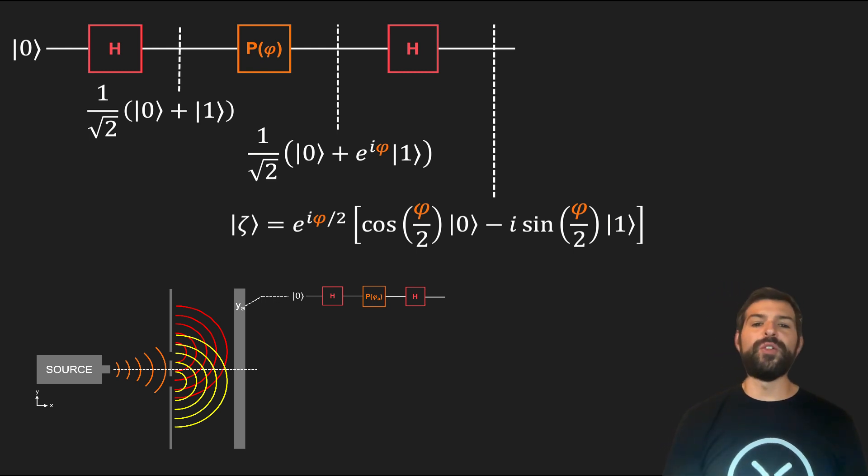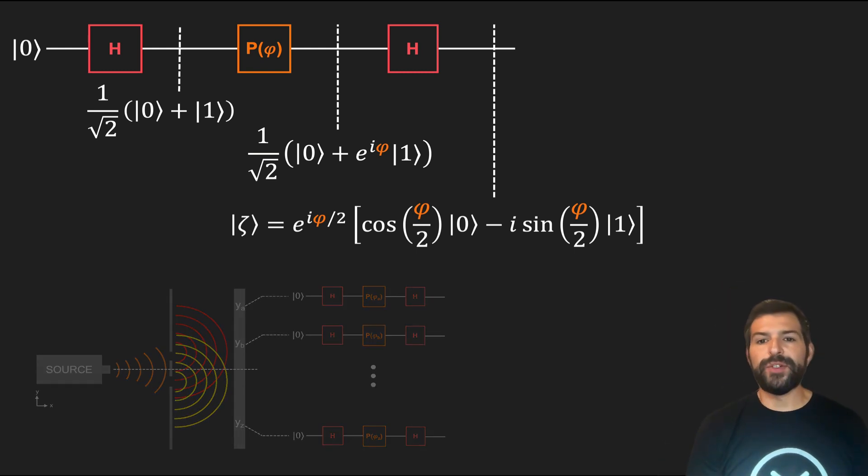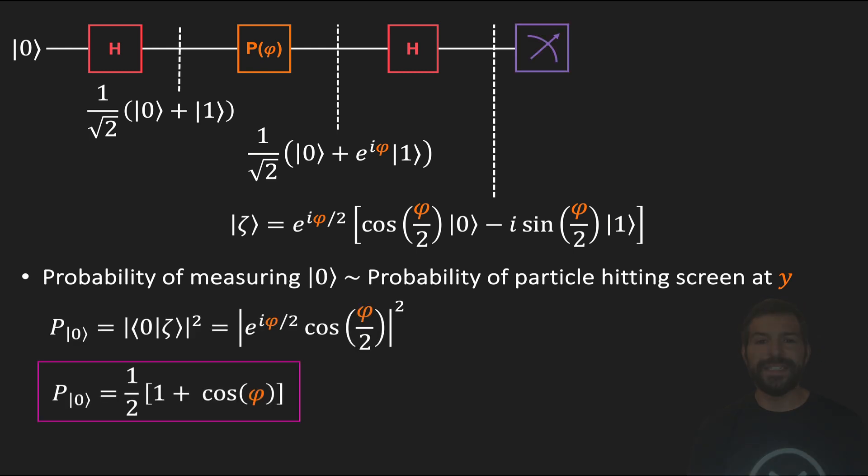Then, in order to fully model the double slit experiment, what we need to do is run this quantum circuit for varying values of phi that cover a similar span to that on the screen and look at the statistics of measuring a zero. Having established that measuring a zero for a given phi is equivalent to finding the particle at a given value of y in the double slit experiment, we can compute that probability and see that it is identical to what we got for the double slit experiment up to some normalization factor.